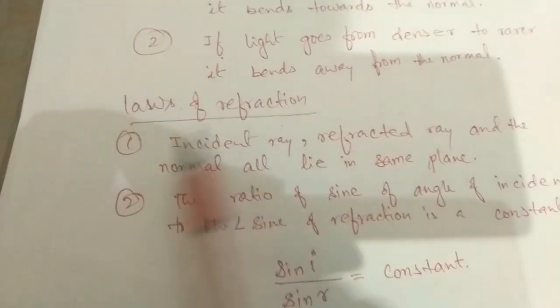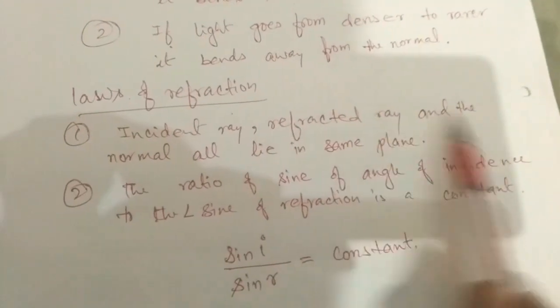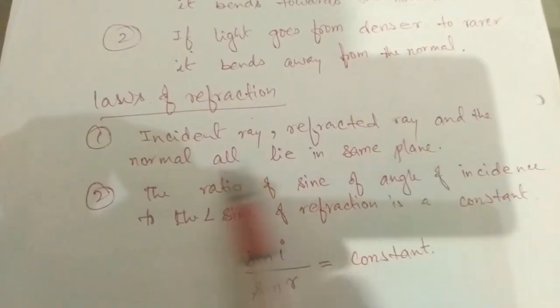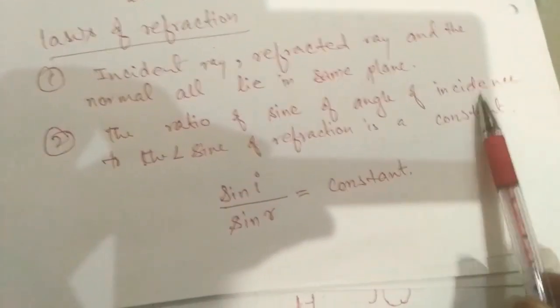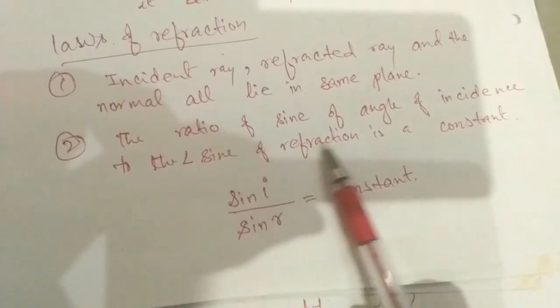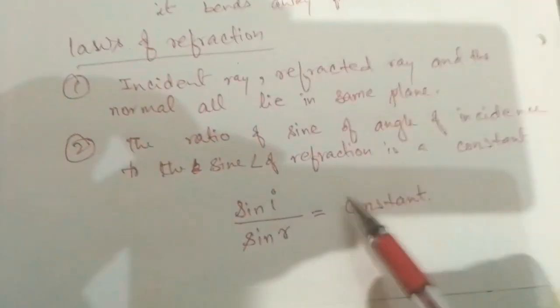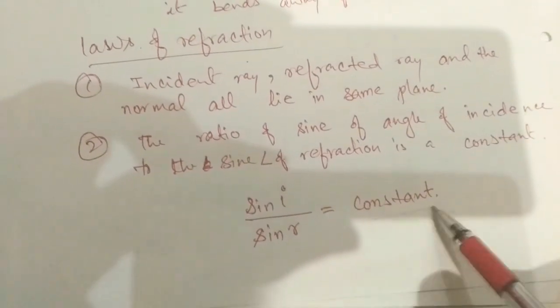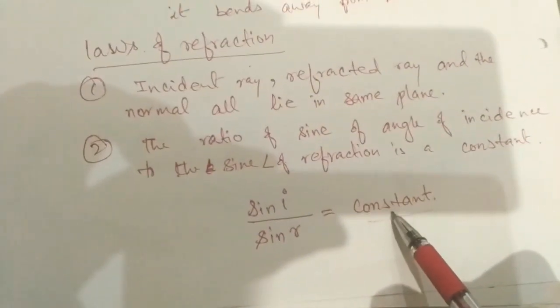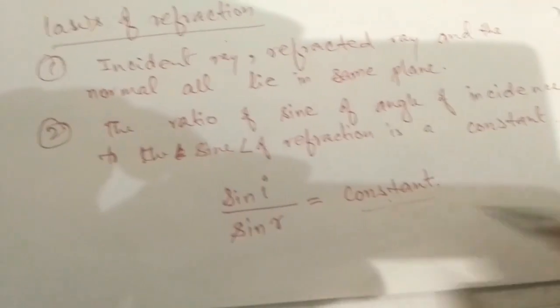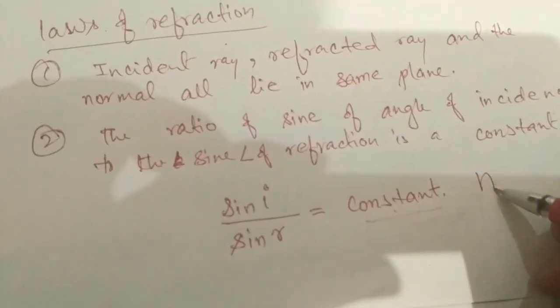The laws of refraction: first, the incident ray, refracted ray, and the normal all lie in the same plane — we can see them all lying in this page. Second, the ratio of sin of angle of incidence to the sine of angle of refraction is a constant quantity: sin i / sin r = constant. This constant quantity is also known as the refractive index of the medium, symbolized by the letter small n.